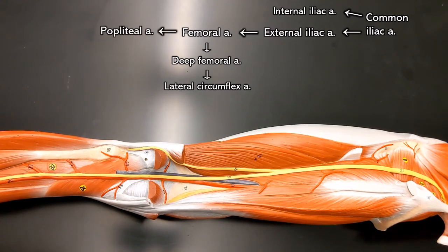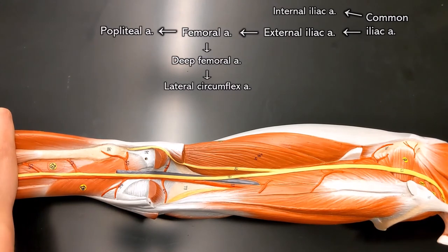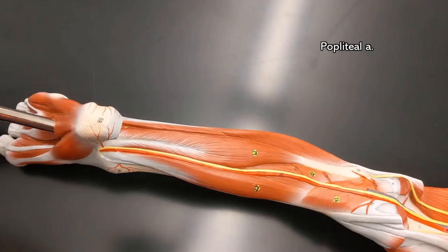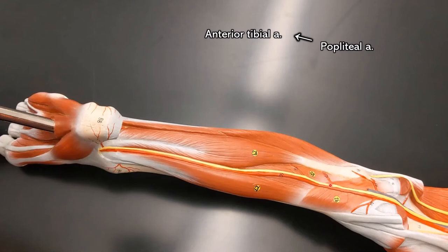Remember, the popliteal region is the region in the back of your knee. The popliteal artery ends when it splits to become the anterior tibial artery and the posterior tibial artery.